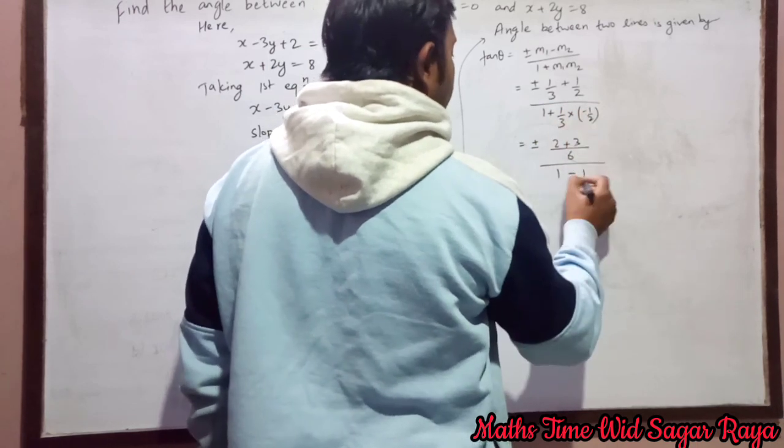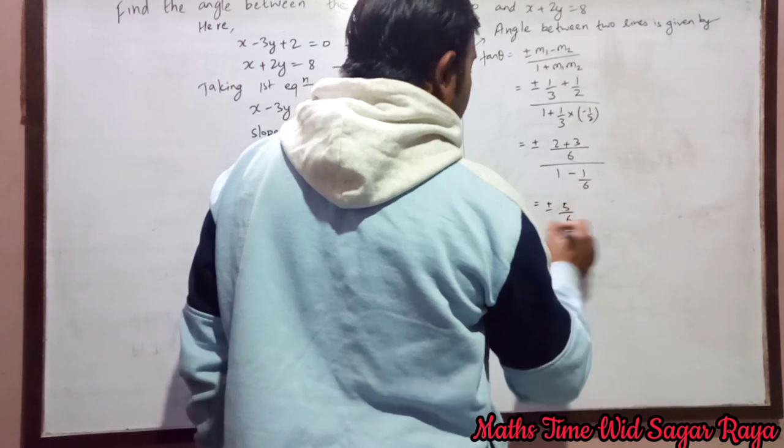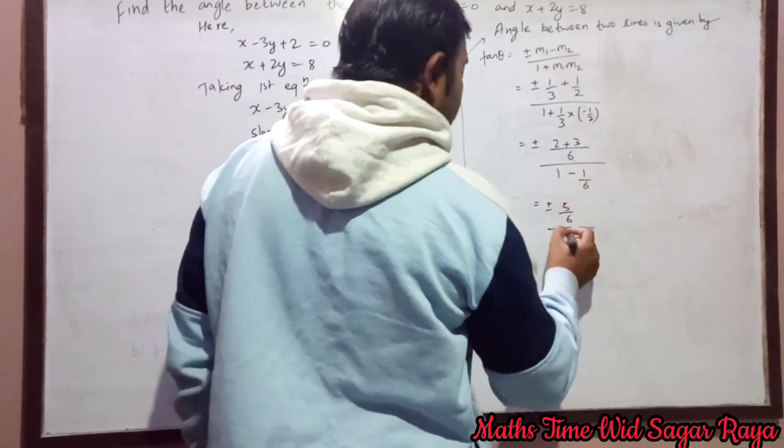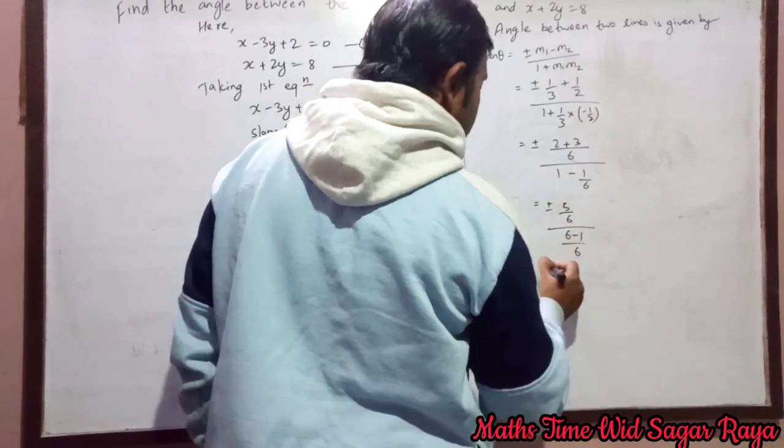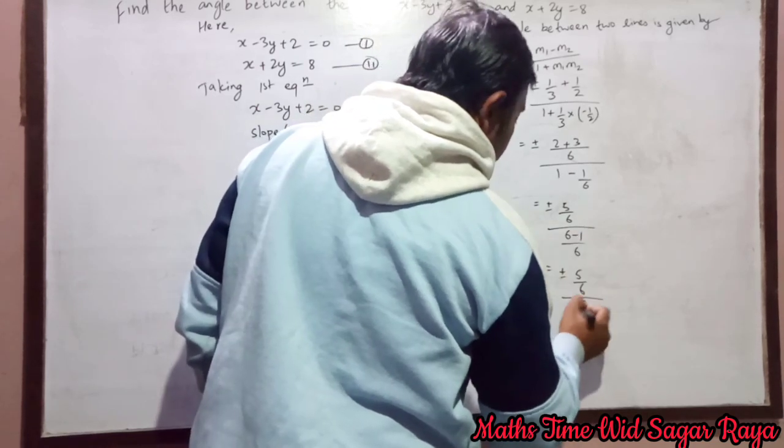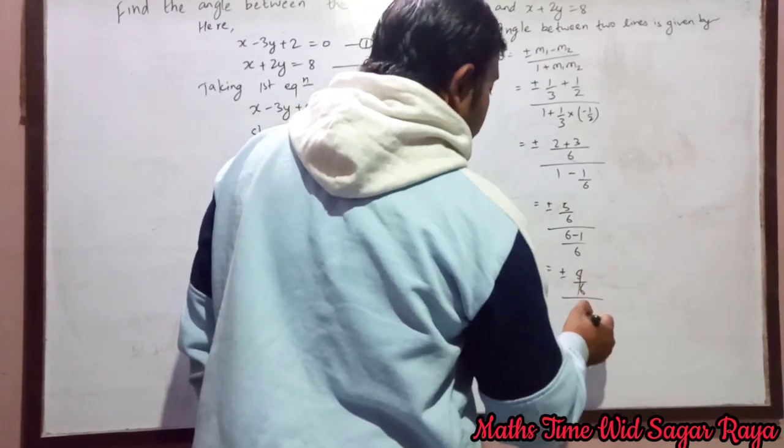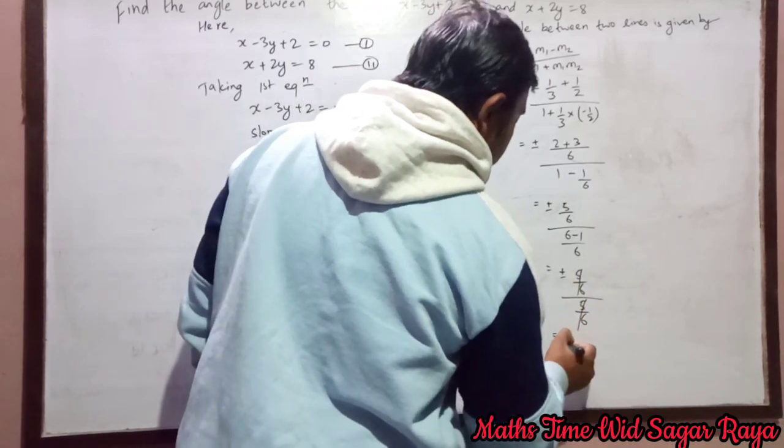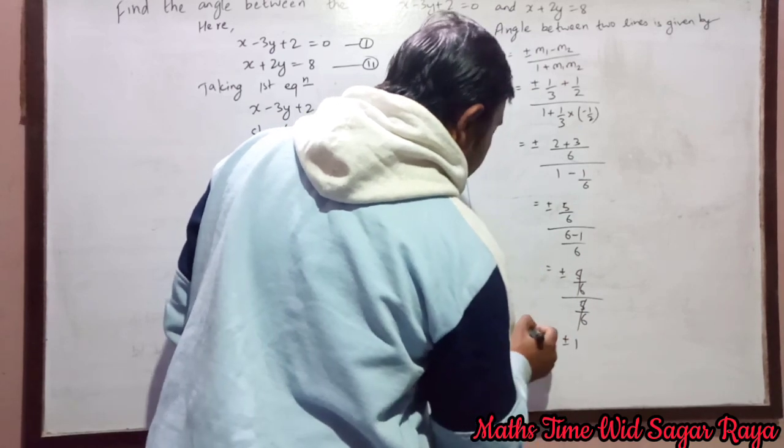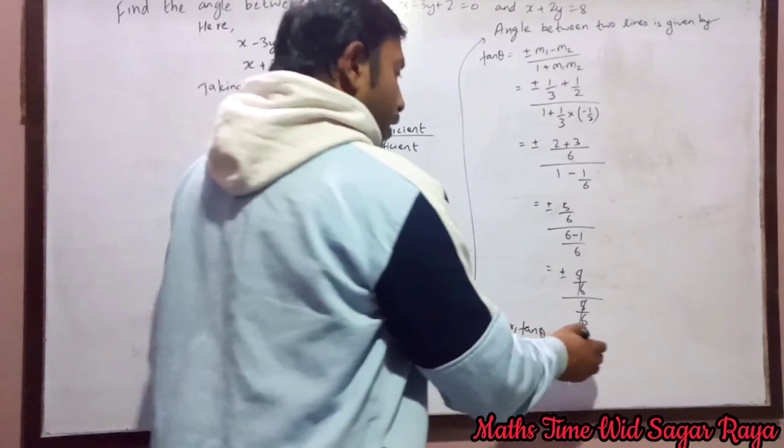So 2 plus 3 is 5 by 6, here also 6. 1 by 6 minus 1 by 6, denominator will be 5 by 6. So we can cancel 5 by 6 and 5 by 6. It will be plus minus 1. We can write tan θ equals plus 1 or minus 1.